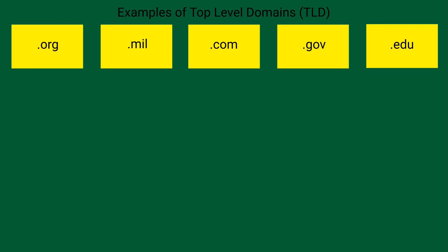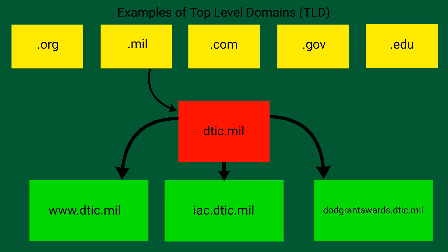This is a place where websites exist, and here are a few top-level domain examples. Organizations such as DTIC, for example, have a domain that exists within the .mil top-level domain. Looking even closer, we find there are many subdomains at DTIC, such as WWW, IAC, or DOD Grant Awards.